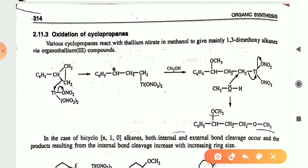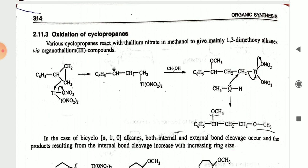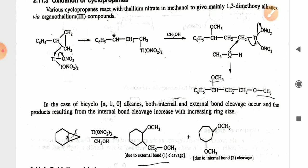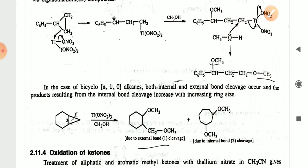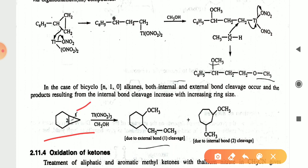For oxidation of cyclopropanes, various cyclopropanes react with thallium nitrate in methanol to give mainly 1,3-dimethoxy alkane via an organothallium compound. In bicyclic systems where n = 1, both internal and external bond cleavage occur, and the product resulting from the initial bond cleavage involves an increase in ring size.